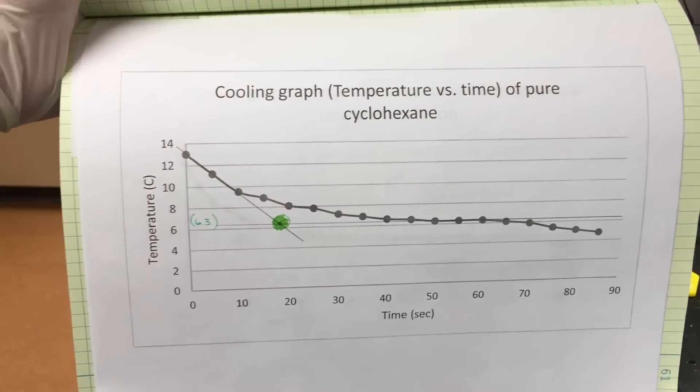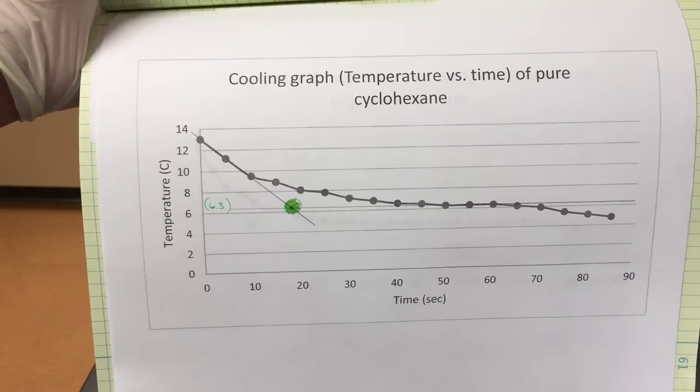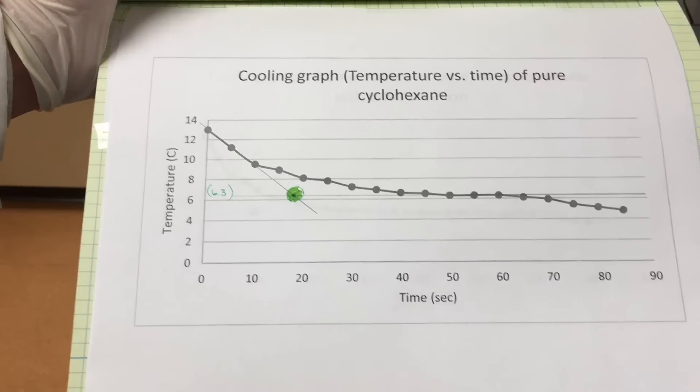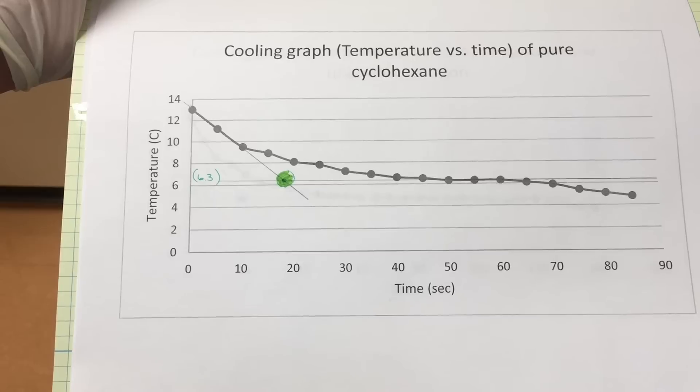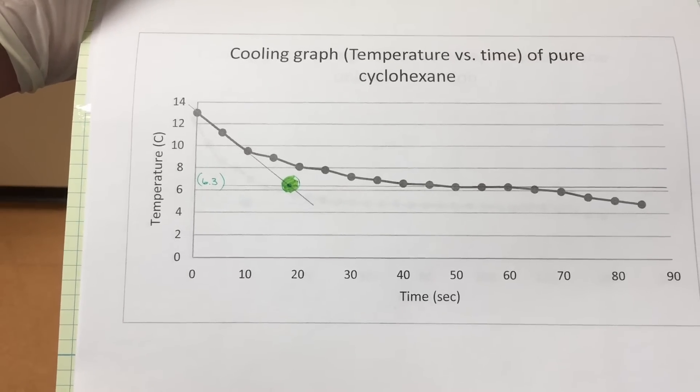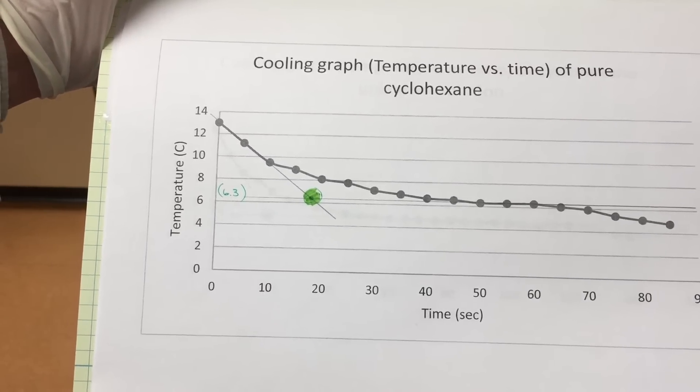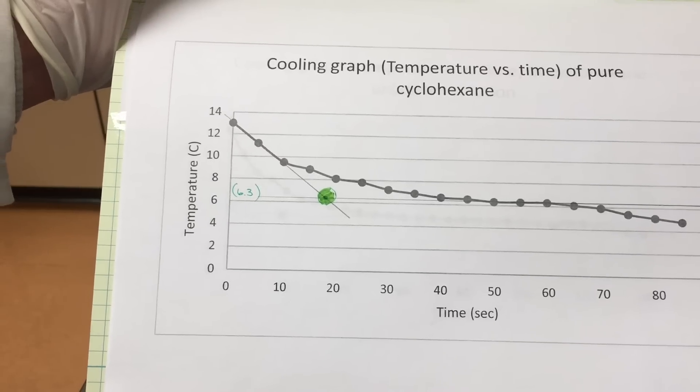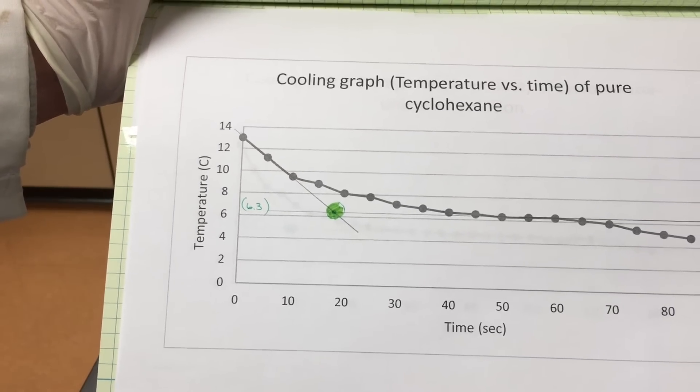After measuring the temperature decrease for a couple minutes, we can graph our results, temperature versus time. We saw that there was a plateauing or flattening of the cooling curve. The freezing point for our sample of cyclohexane was 6.3 degrees Celsius.